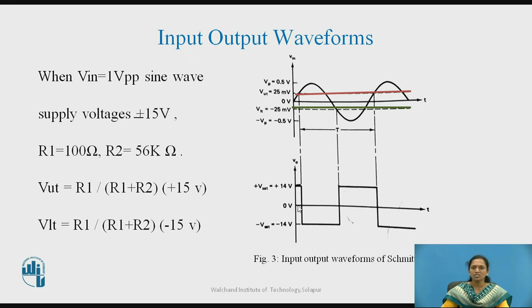The output voltage will vary between 0 and ±Vsat. As we are using a ±15 V supply, there is a condition for the output voltage swing — the maximum output voltage swing — and there will be a drop across the IC. So the output signal varies between 0 to +14 V and 0 to −14 V.